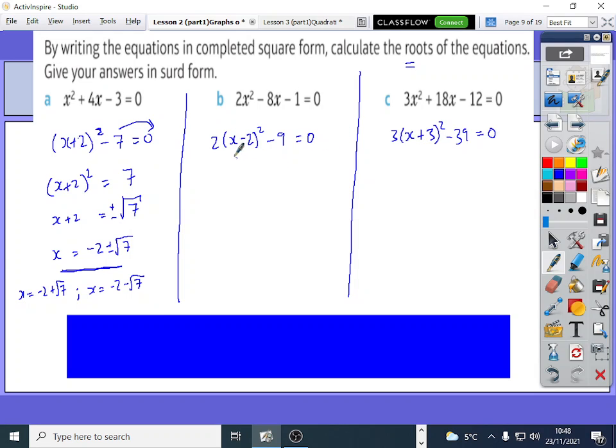So if I was doing a similar thing here and solving this, the first thing I do is I always take this to the other side, opposite operation, so you get 2(x-2) squared equals 9. Then I've been timesed here so I do the opposite of times, which is divide, so I get (x-2) squared equals 9 over 2.